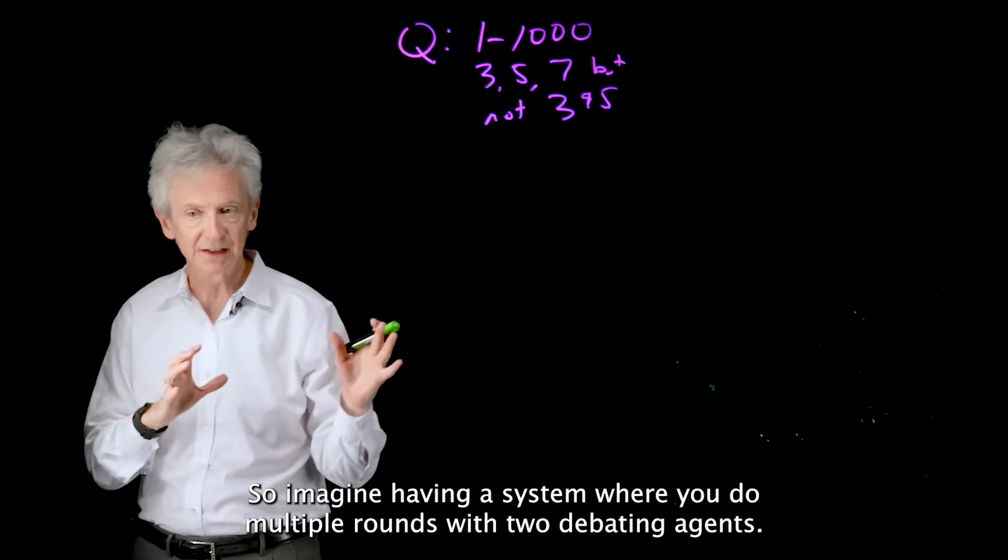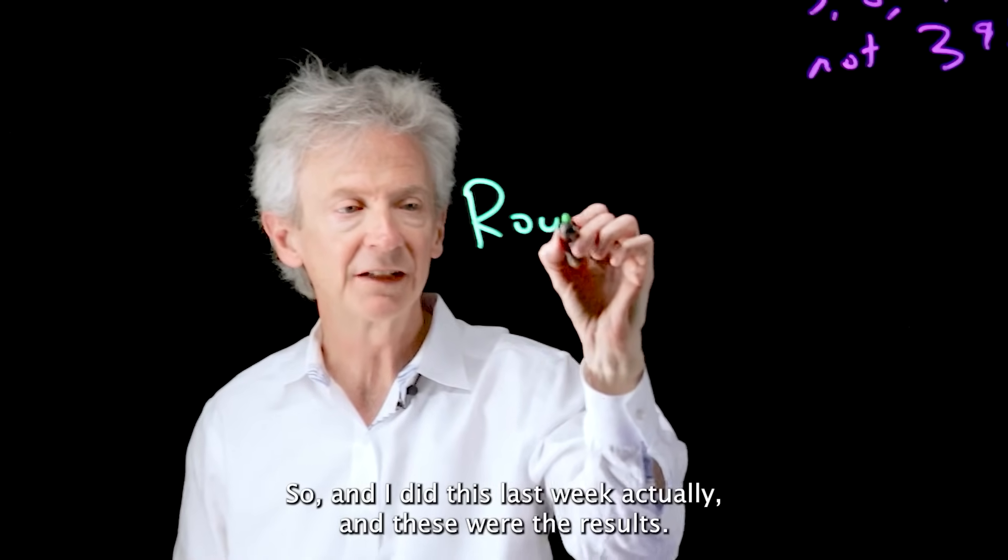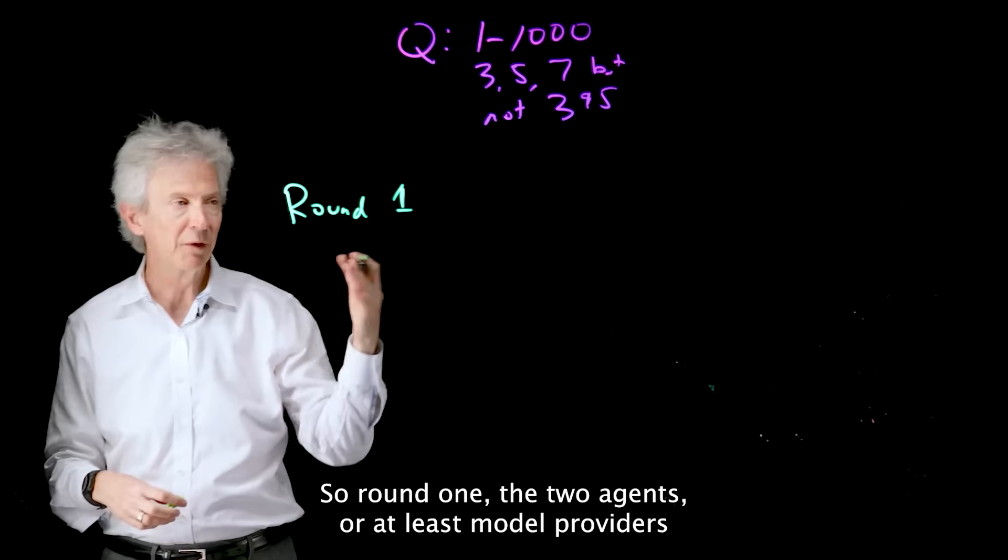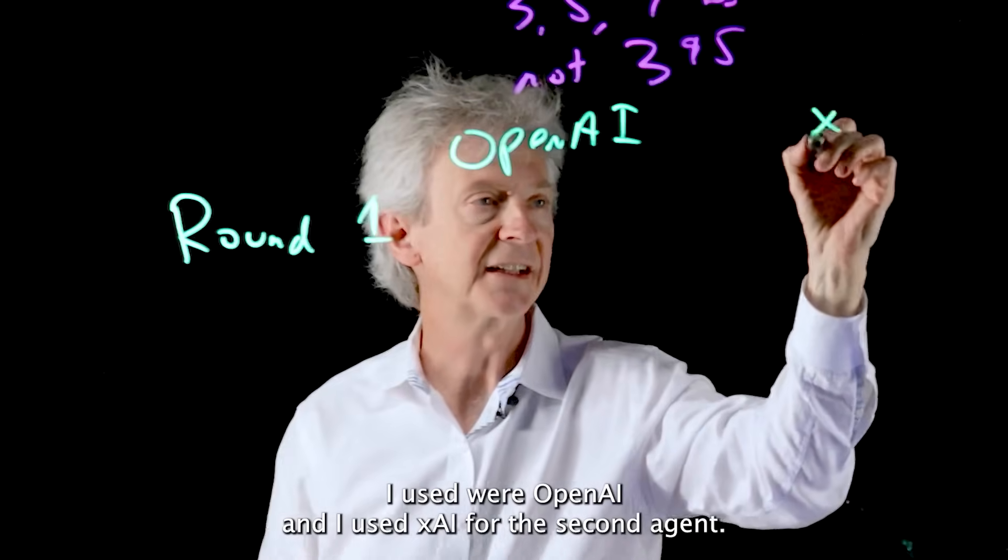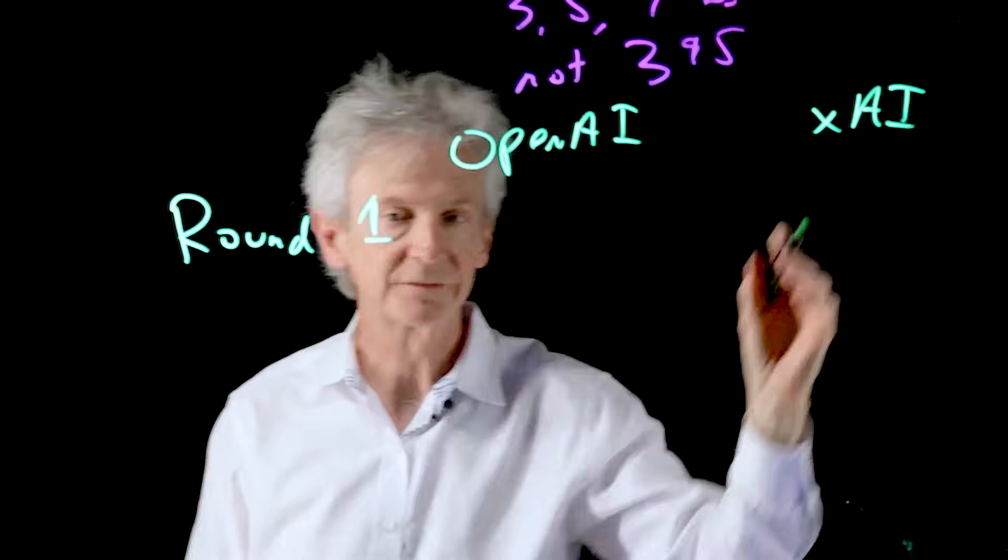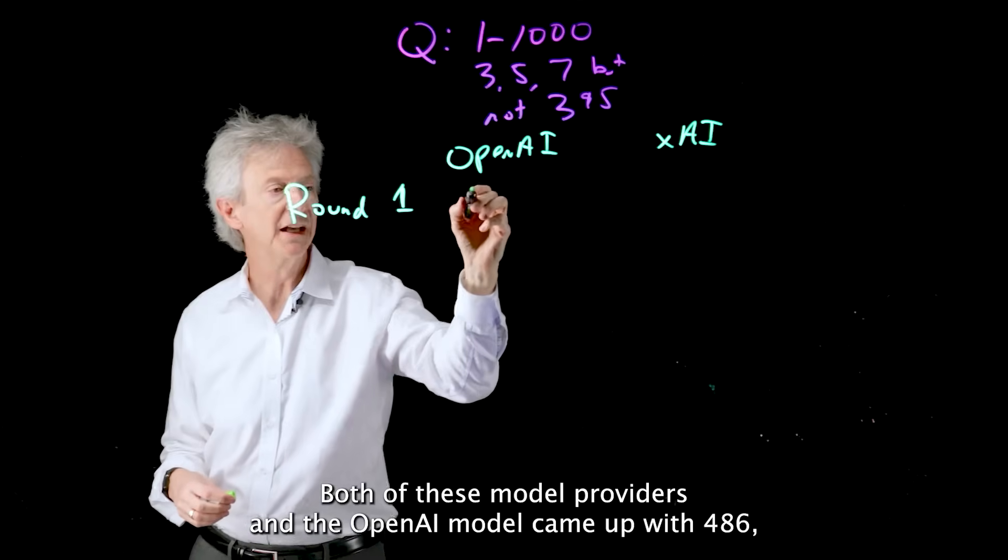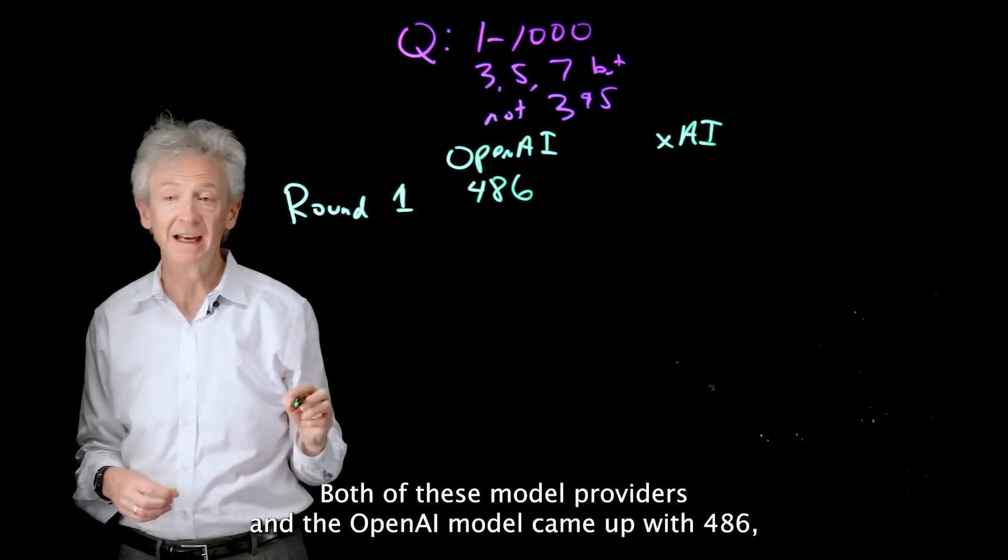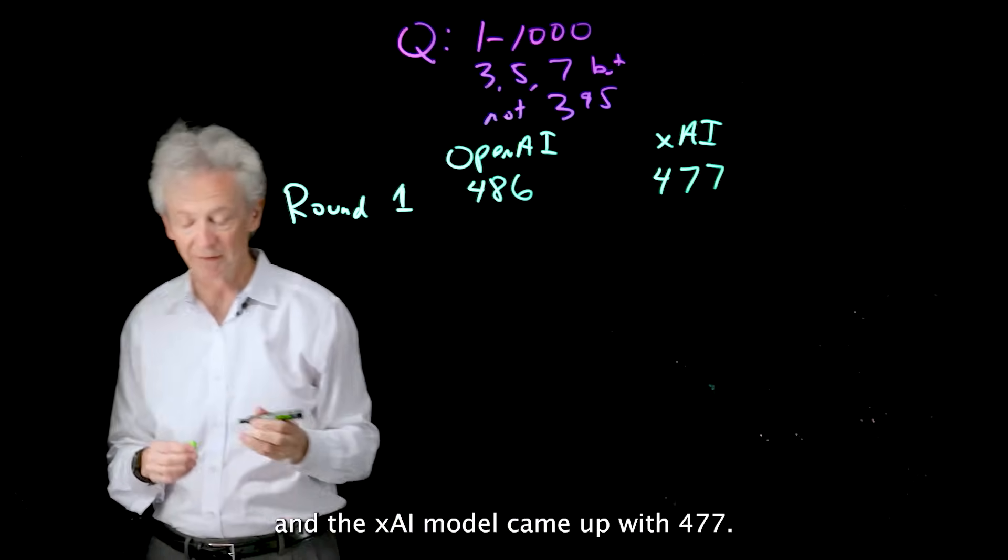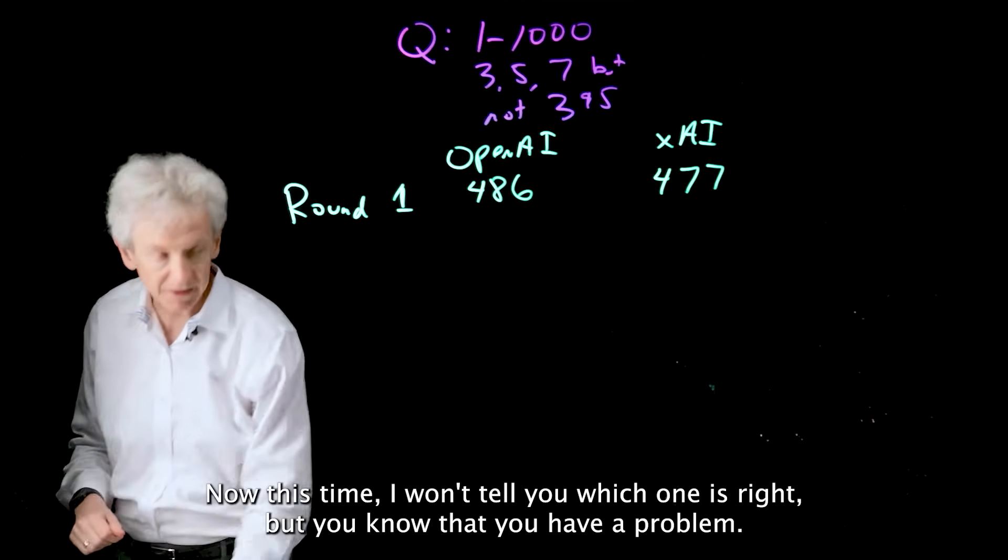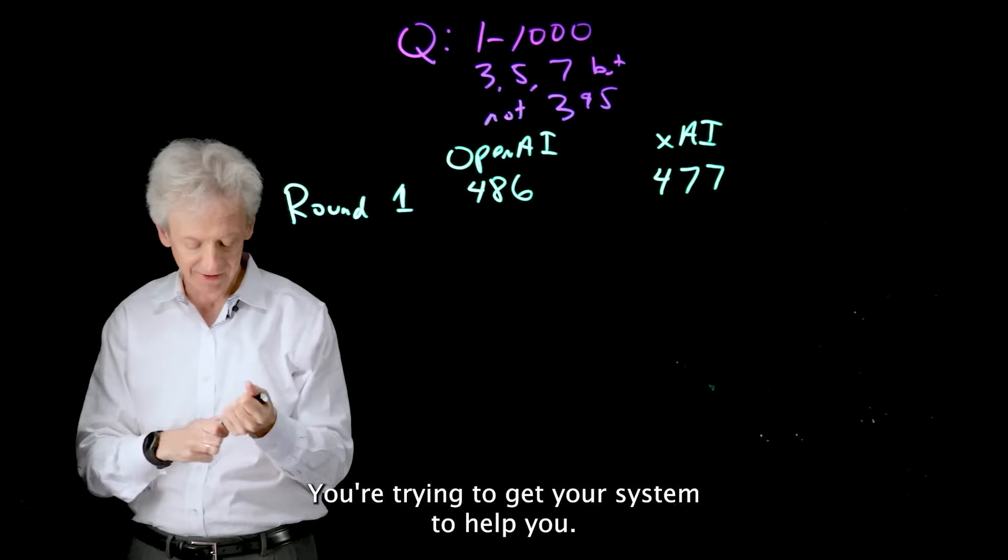So imagine having a system where you do multiple rounds with two debating agents. And I did this last week actually, and these were the results. So round one, the two agents, or at least model providers I used, were OpenAI and I used XAI for the second agent. In round one, I asked both agents this question, both of these model providers, and the OpenAI model came up with 486, and the XAI model came up with 477. Now this time I won't tell you which one is right, but you know that you have a problem. You don't really know the real answer. You're trying to get your system to help you.